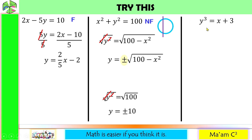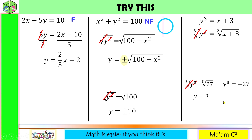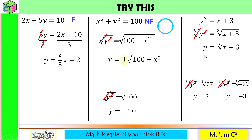Let's have another one: y cubed is equal to x plus 3. To solve for y, we take the cube root of both sides. This gives us y is equal to the cube root of x plus 3. For example, the cube root of 27 is positive 3, and the cube root of negative 27 is negative 3. Every number gives a unique cube root — if your number is positive, it gives a positive cube root; if negative, it gives a negative cube root. So your y is defined, and the cube root of x plus 3 will give a unique value of y. Therefore, this equation is a function.